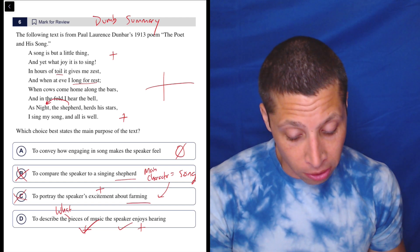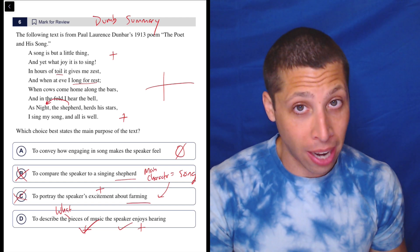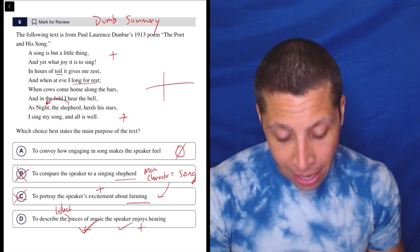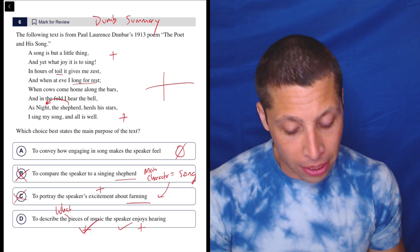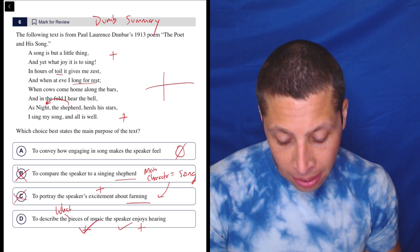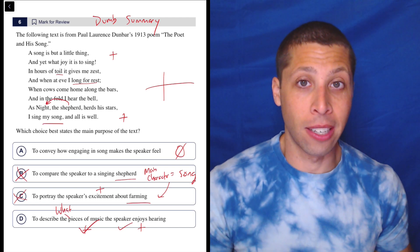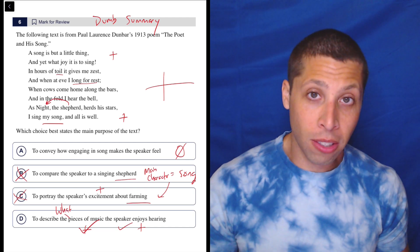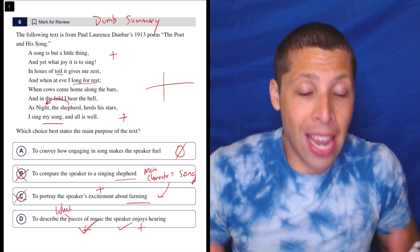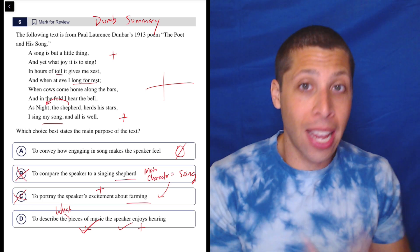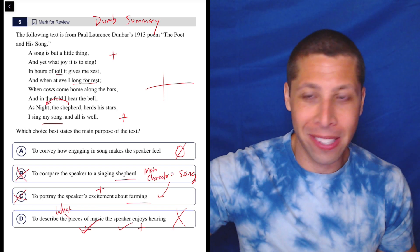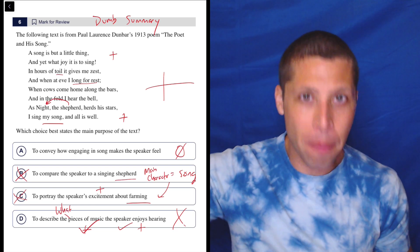What pieces of music does the speaker enjoy hearing? Does it say, well, it says a song is a little thing and joy it is to sing, right? It doesn't say what kind of song he likes to sing. It gives him zest when he longs for rest. There's something about the cows and hearing the bell. But again, it's not saying that he likes songs with bells, right? It just talks about a bell. I sing my song and all is well. Again, what song are you singing? He's not getting specific. So if we turn this into a question, what pieces of music does the speaker enjoy hearing? We don't have an answer to that. And so the fact that the poem is not answering that question means that this can't be the main purpose of the text. It has not fulfilled its purpose. If its purpose was to name the songs and describe them, then boom, we'd have that answer.